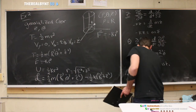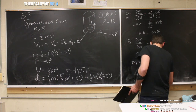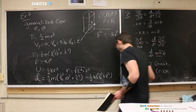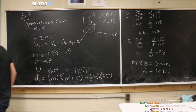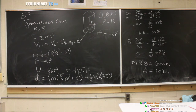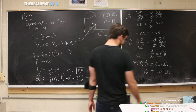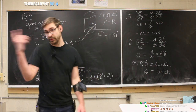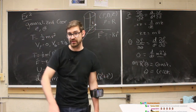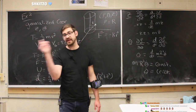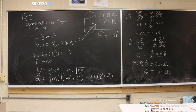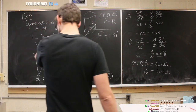Solving for theta-dot, we get some constant. So these two equations tell us: the particle undergoes harmonic motion in the z direction, and constant motion in the theta direction — there's no angular acceleration. The time derivative of m R-squared theta-dot equals zero, meaning theta-dot is a constant.